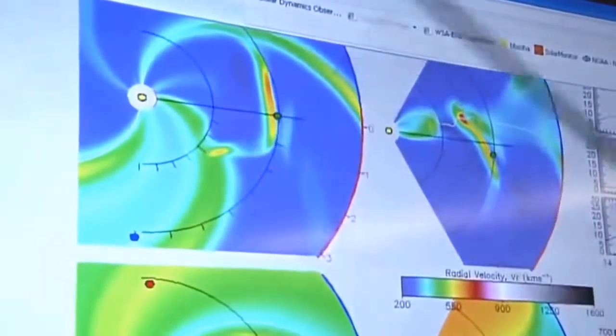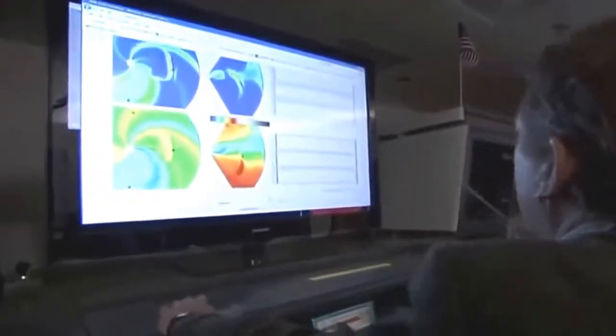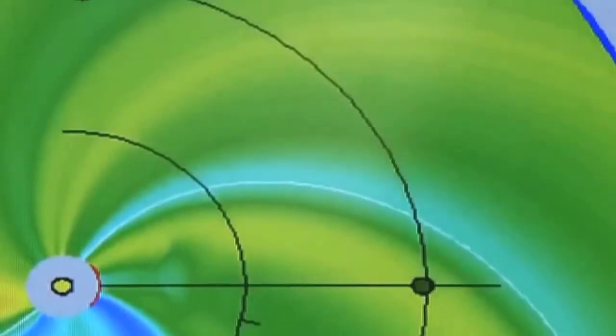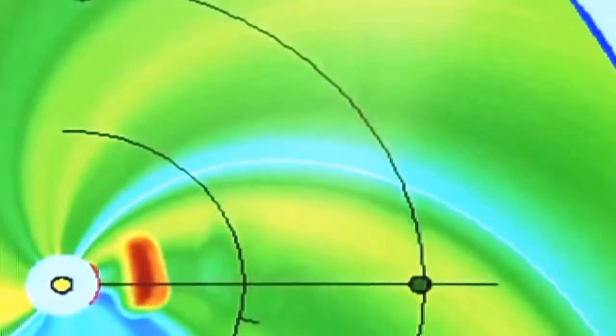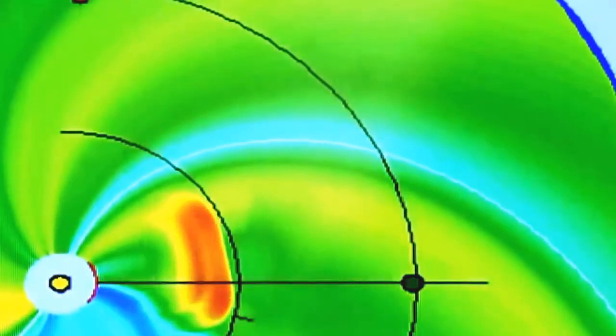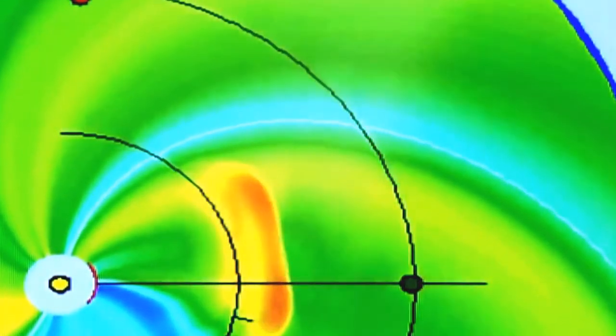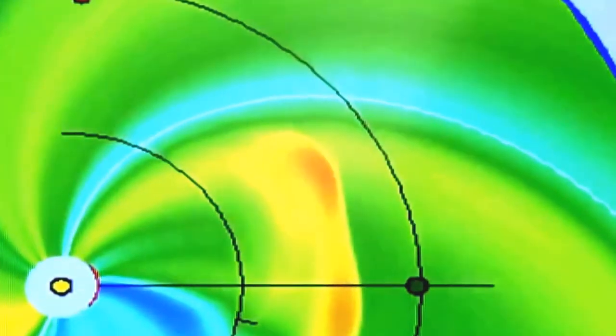The team models the approaching storm. Their simulation shows it racing out from the sun on the left towards the small dot on the right. Earth.